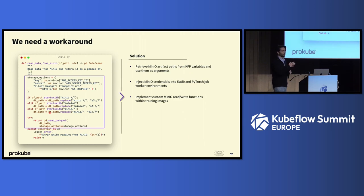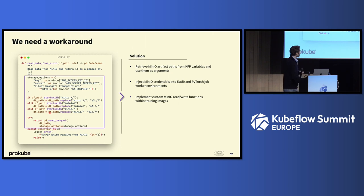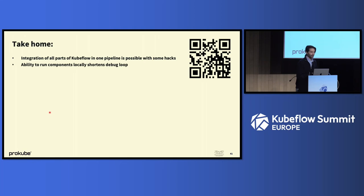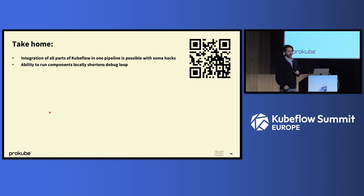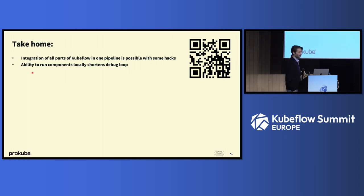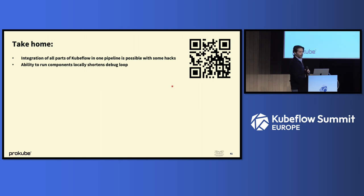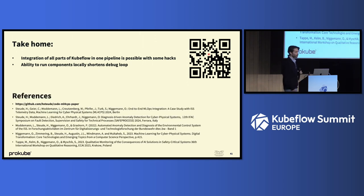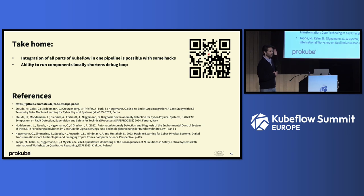Problem solved. By doing this, we were able to integrate all the tools mentioned into one single Kubeflow Pipelines workflow. If you'd like to remember two things from today: first, it is actually possible to integrate Dask, Katib, and PyTorch jobs into one single Kubeflow pipeline — however, it does still require some hacks. Second, it really shortens the debug loop if you're able to run your component code locally — we would highly recommend that. Check out our GitHub repository and the papers we wrote about related stuff — you'll also find information about the ISS and more on the machine learning side.